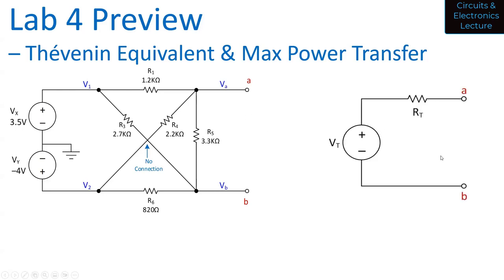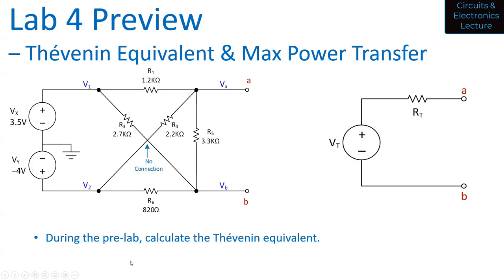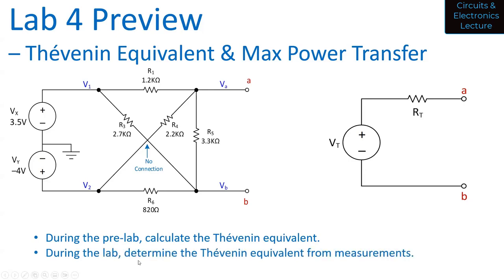What you're going to create is a Thevenin equivalent circuit. During the pre-lab, you're going to calculate the Thevenin equivalent circuit. During the lab, you're going to determine the Thevenin equivalent circuit from measurements. So instead of analyzing the circuit in lab, you're going to do some measurements by connecting different resistors to the output and try to figure out what the Thevenin equivalent is, and then see how that compares to your analysis.